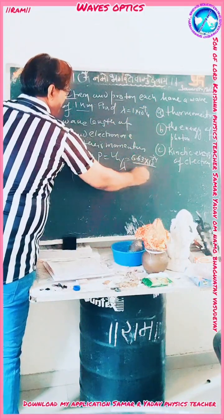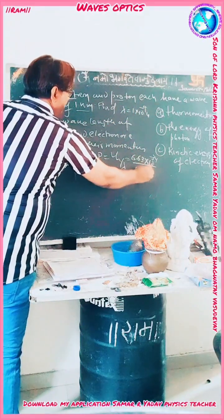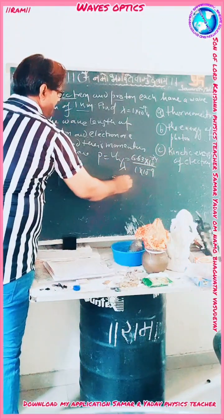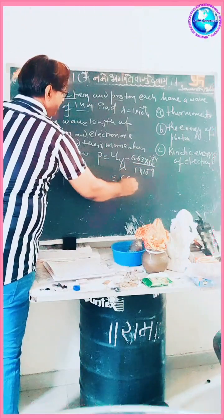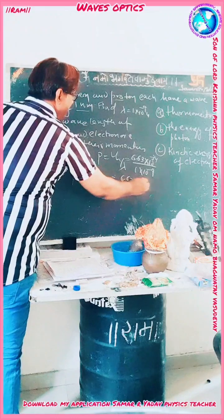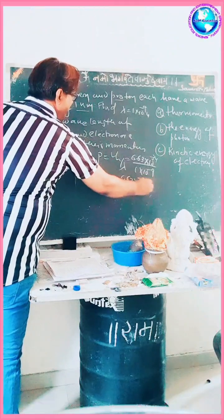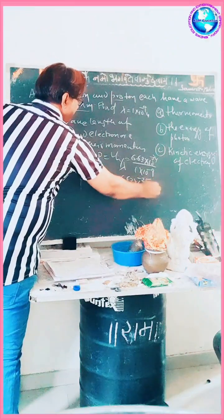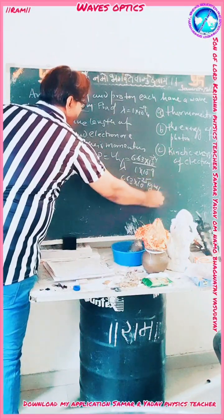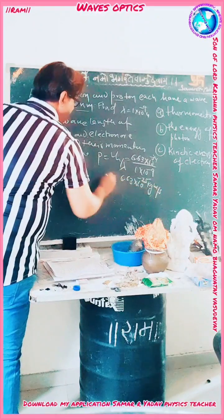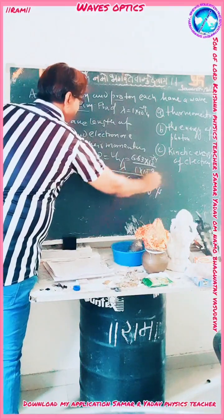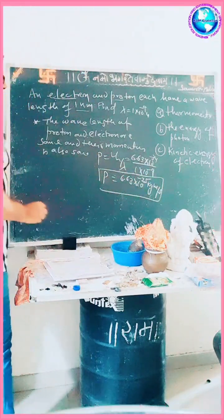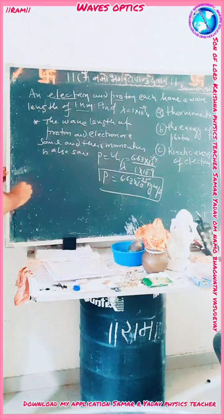Solving this gives p = 6.63 × 10⁻²⁵ kilogram meter per second. This is the momentum of both the electron and the photon.